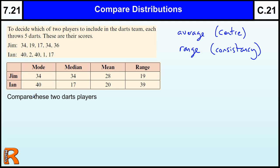Here we have an example with two players that throw five darts and we'll use this to compare the players. If we look at the values we got from calculating the data,